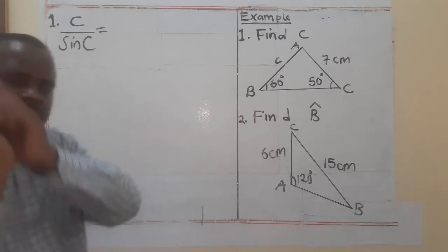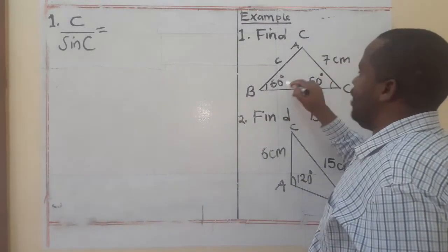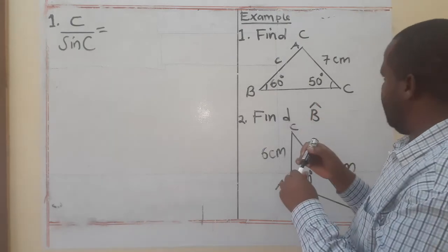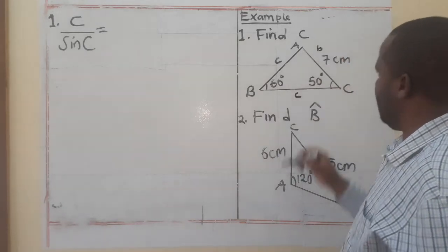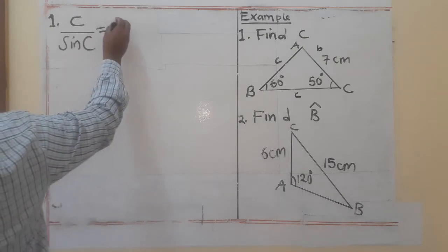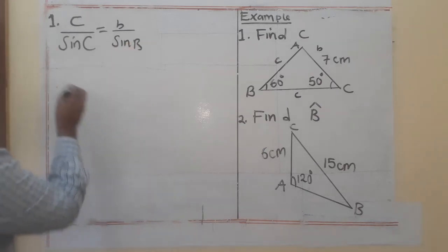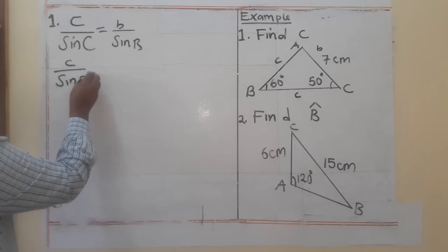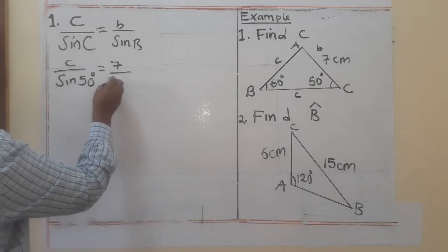We say c divided by sin C equals the ratio from the given angle and side pair. Looking at the triangle, side b is 7 and angle B is 60 degrees. So we set up: c divided by sin 50° equals 7 divided by sin 60°.